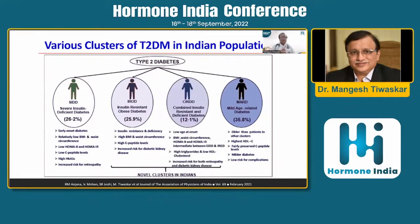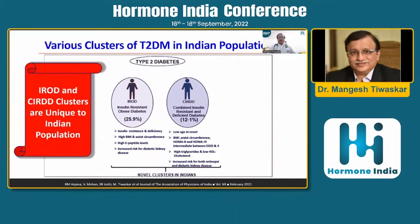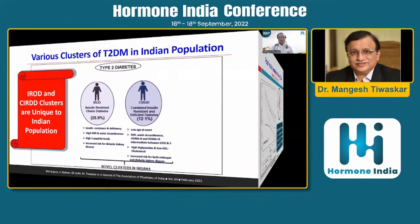The fourth characteristic subtype seen in the Indian population is Combined Insulin Resistance and Deficiency Diabetes — a much more severe form, presenting at a younger age and highly vulnerable to complications. Apart from MARD, the insulin-deficient, IROD, and combined insulin resistance and deficiency diabetes subtypes are very unique to the Indian population among young type 2 diabetic patients.